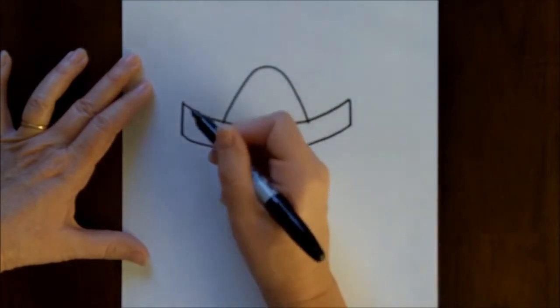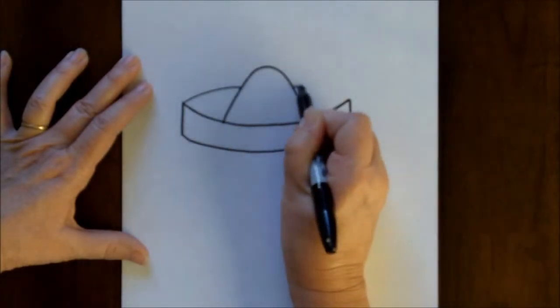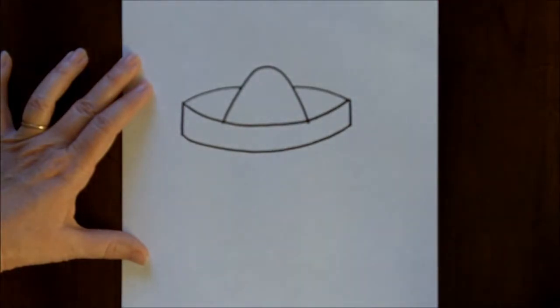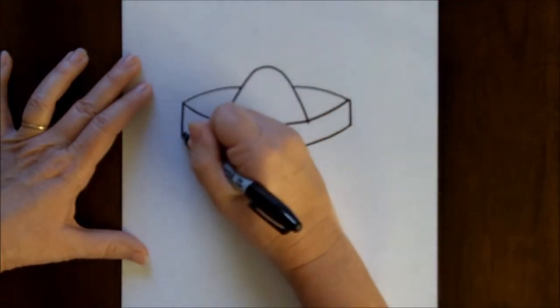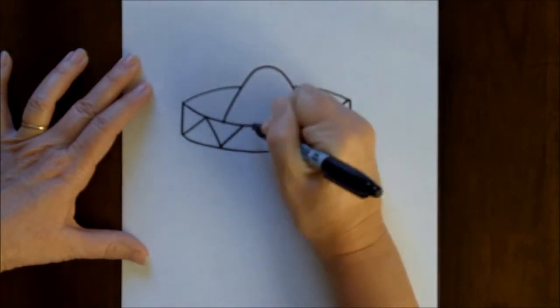Now we're going to go back up to the top and make a curved line to close up the top of the hat. Now we're going to add a little bit of detail, so I like to make just straight lines zigzagging